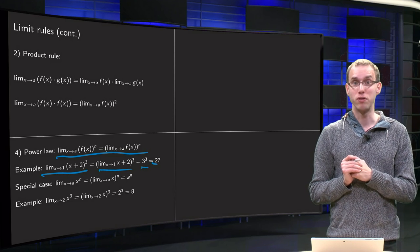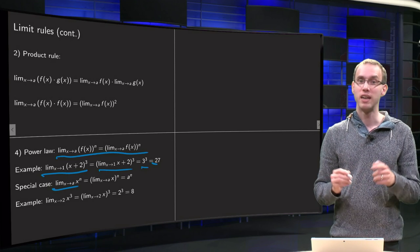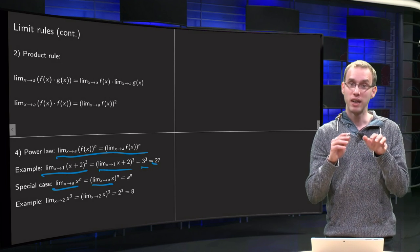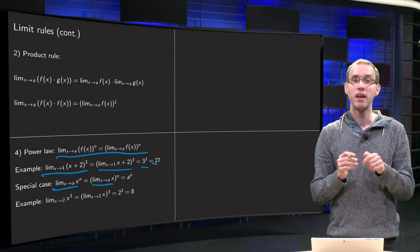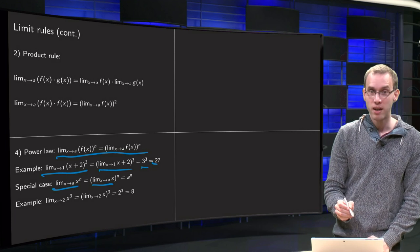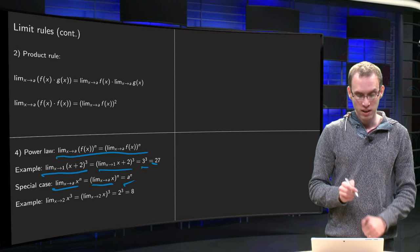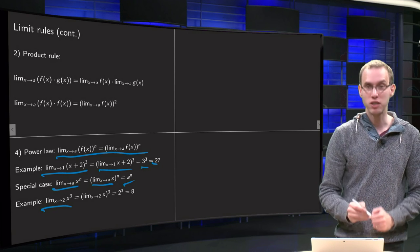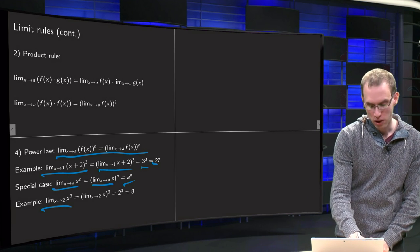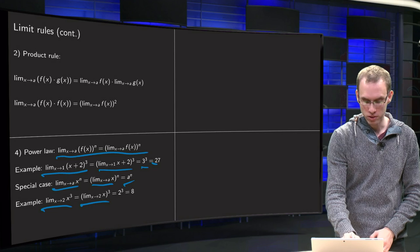A special case of the power law is when f(x) equals x. Then the limit as x→a of x^n equals a^n, using our basic limit. For example, the limit as x→2 of x^3: take the limit inside, take the limit of x as x→2 first and then cube it, giving 2^3 equals 8.